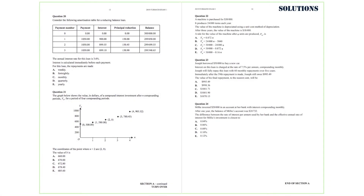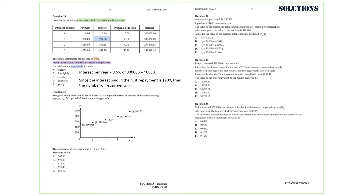Question 20. Consider the following amortization table for a reducing balance loan. The annual interest rate for this loan is 3.6%. Interest is calculated immediately before each payment. The question is asking for the number of repayments per year. Interest per year equals 3.6% of 300,000, which is equal to 10,800. Since the interest paid in the first repayment is $900, then the number of repayments per year equals 10,800 divided by 900, that is 12. So the answer we are after is C, monthly.